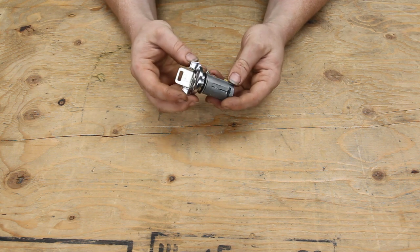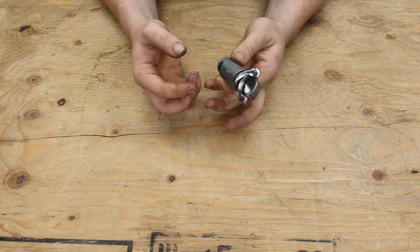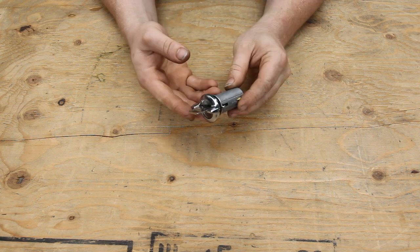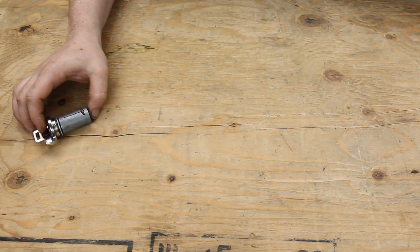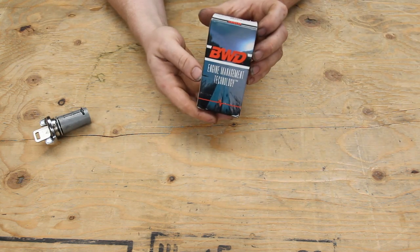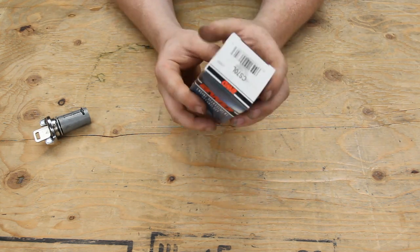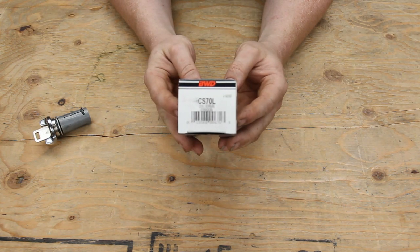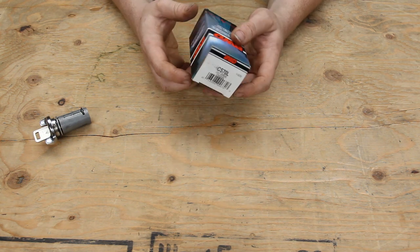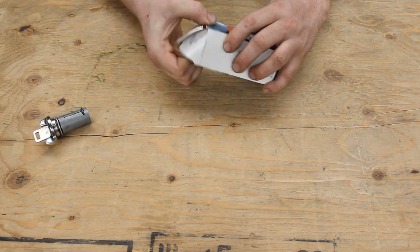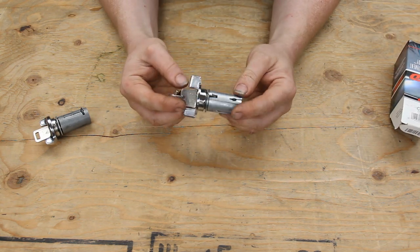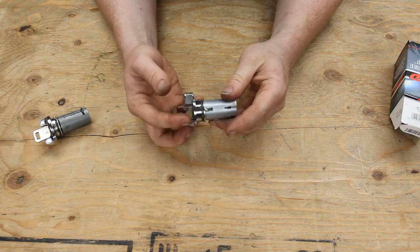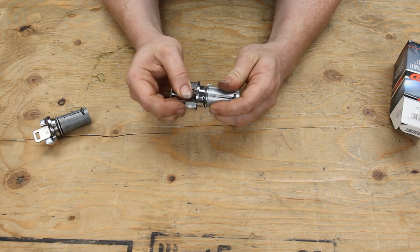The good news is, however, you can still get replacements because this is not an AMC proprietary part at all. In fact, this is General Motors. This is a replacement BWD engine management. Here's your part number right there. So inside of here is our lock cylinder. There we go. There's our lock cylinder and a replacement set of keys.